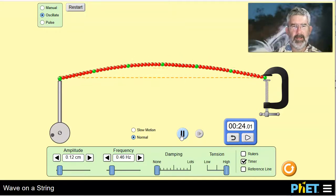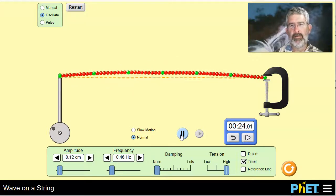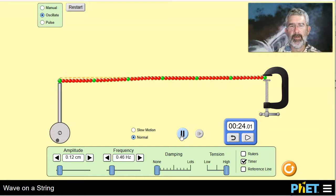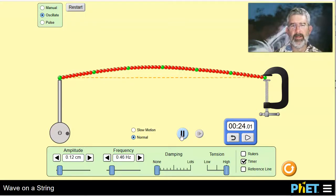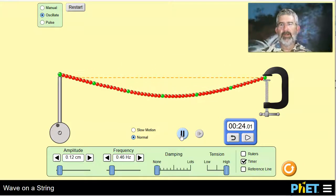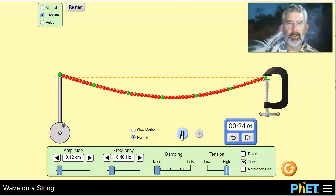But then it seems to be dying off again. So we get an increased amplitude and then a decreased amplitude. And then it should build back up again. And we get these what I would call beats. We get this increasing amplitude and decreasing amplitude, increasing amplitude and decreasing amplitude.